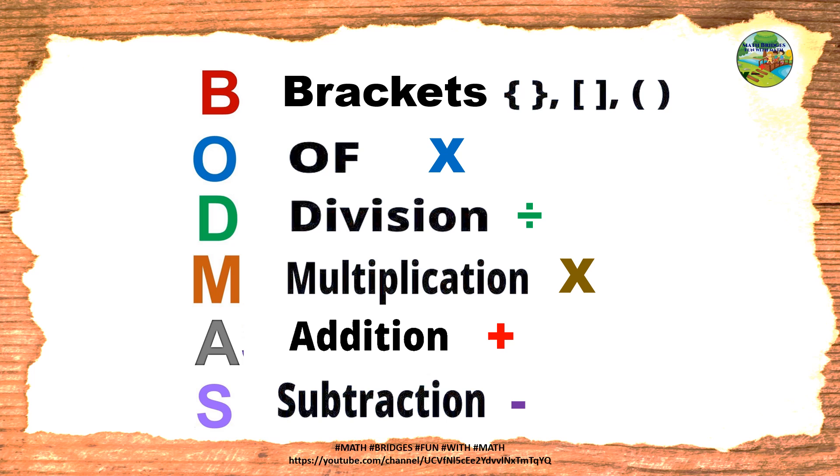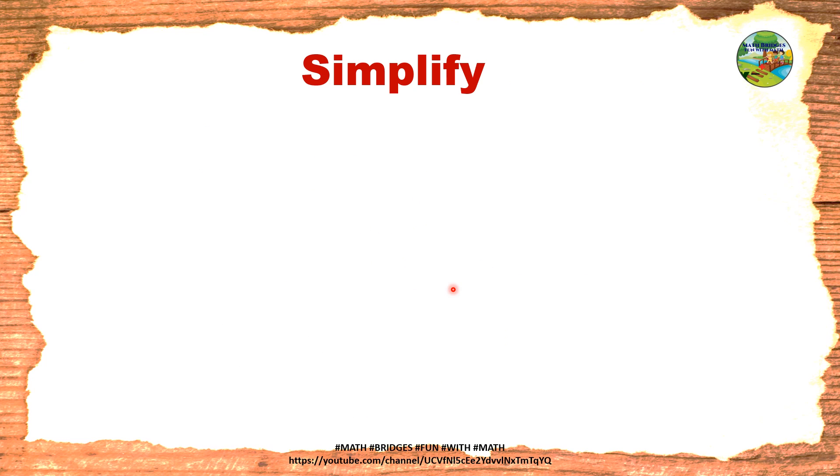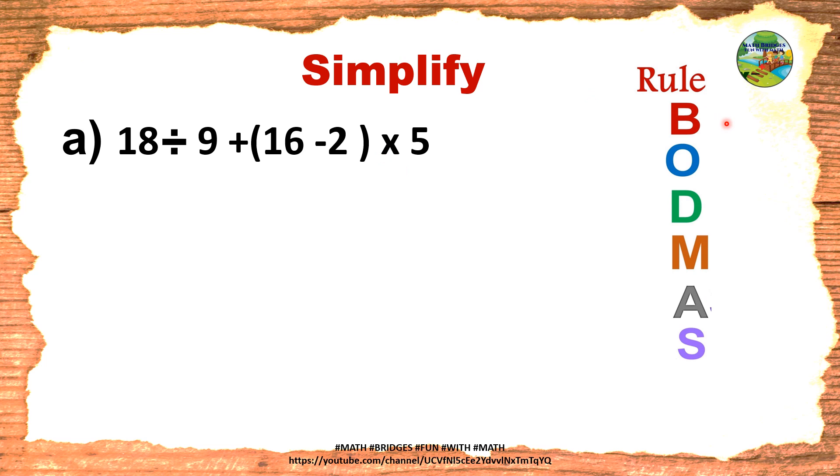So we have to follow these steps B, O, D, M, A, S to solve the problems when we get all the basic operations together. Let's check with an example. Here you can observe we have 18 divided by 9 plus in the bracket 16 minus 2 into 5. If you observe we got all the four basic operations: addition, division, subtraction, multiplication. So we are using the rule called BODMAS.